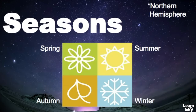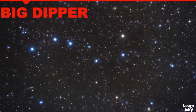Before we begin, let's notice the seasonal symbols that I will use throughout this video. These symbols will remind you when these asterisms can be seen throughout the year in the northern hemisphere. The first star pattern we will look at is one of the most recognized patterns in the sky, and it's known as the Big Dipper.